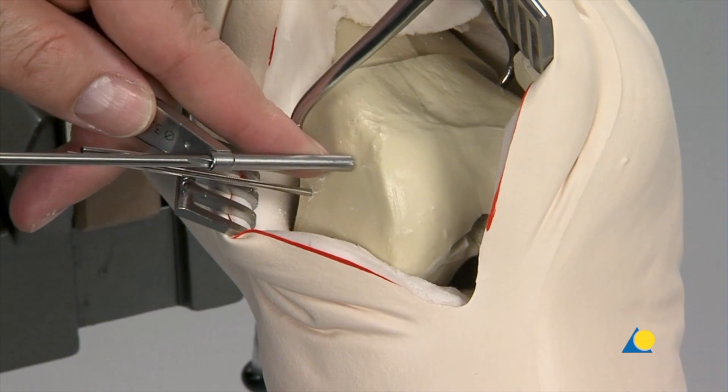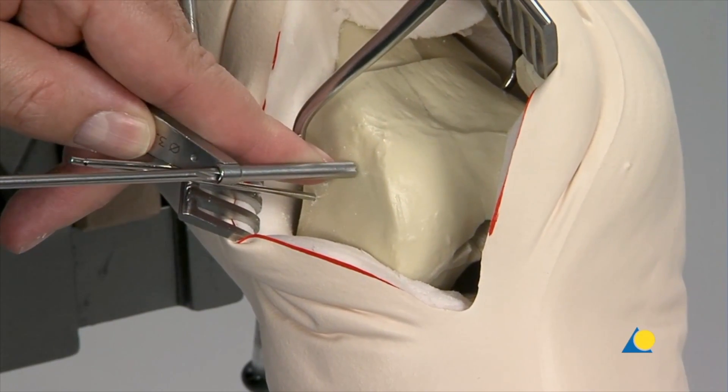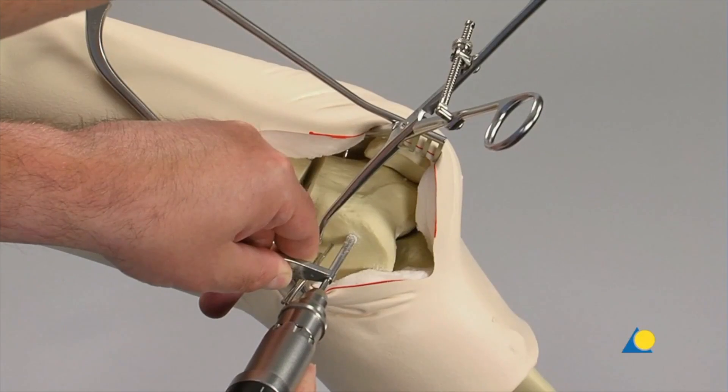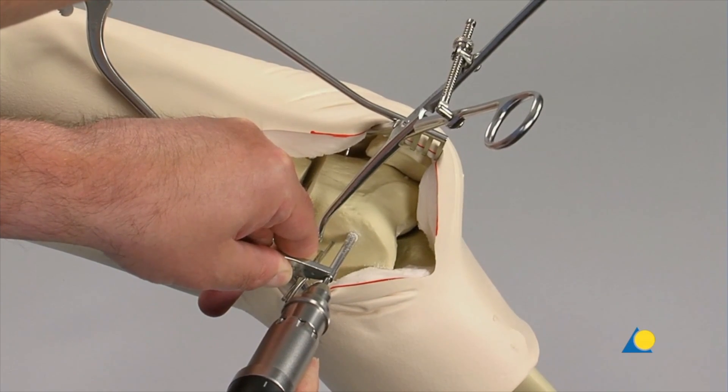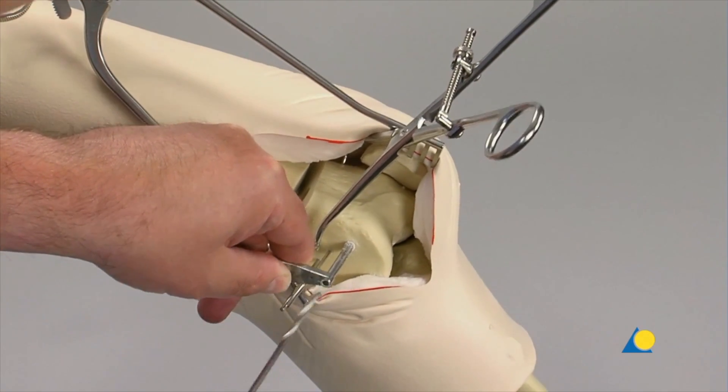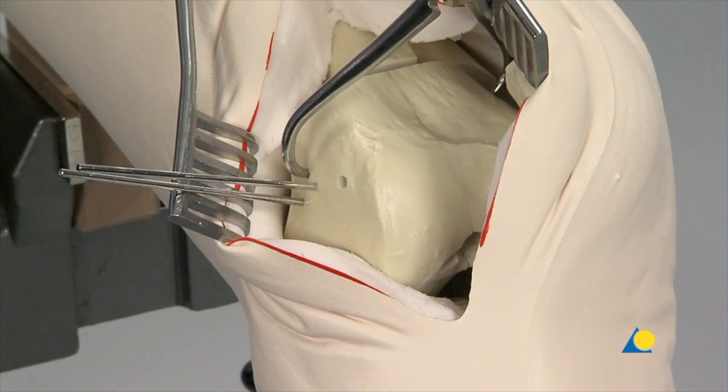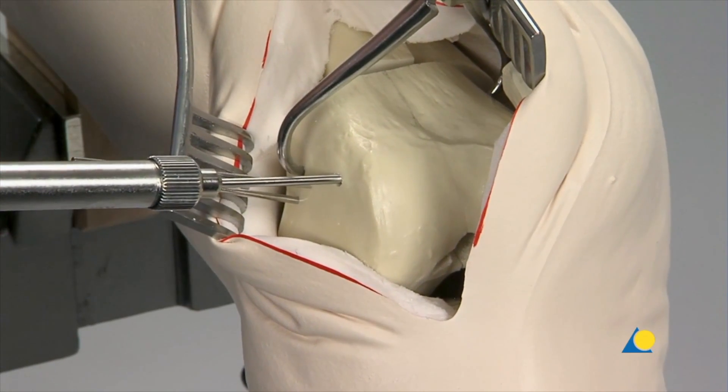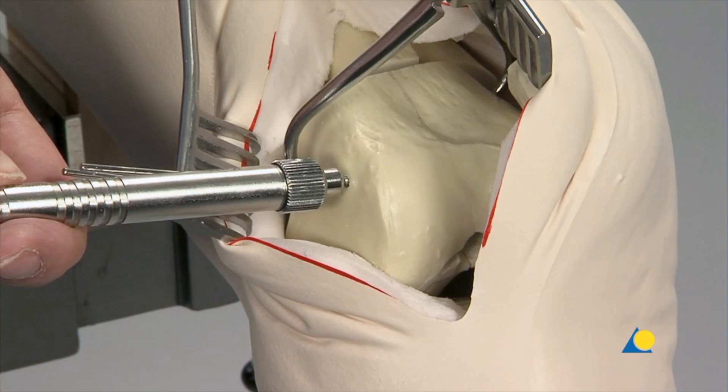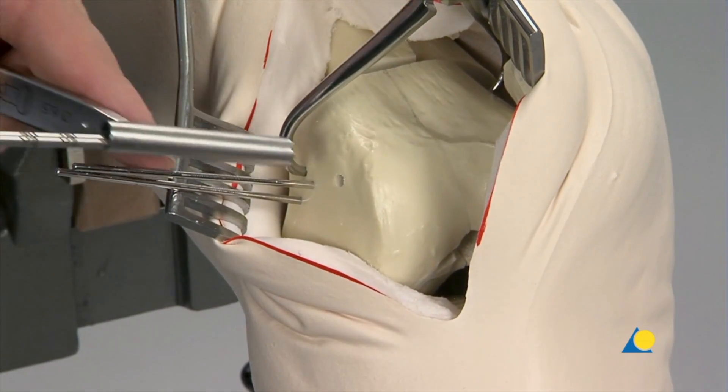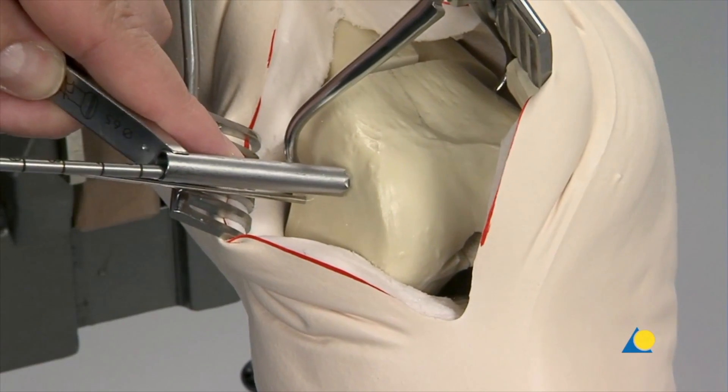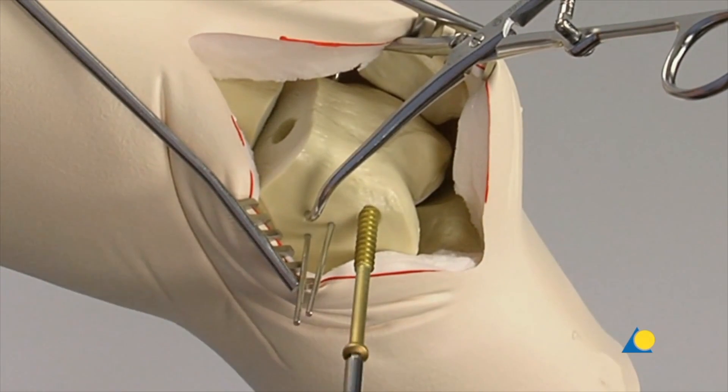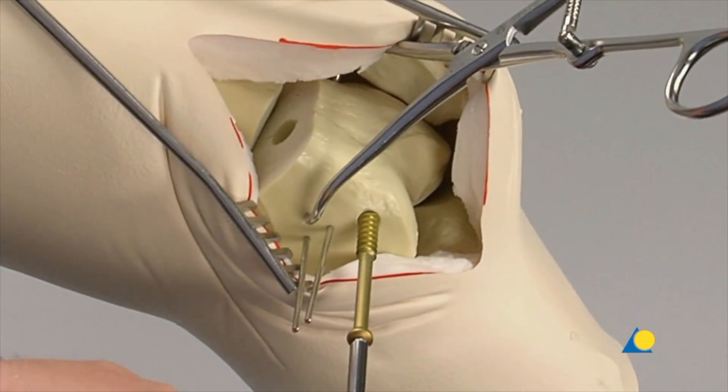For this exercise, two 6.5mm cancellous bone screws with a 32mm long thread are used. The screw hole is pre-drilled with the 3.2mm drill bit, parallel to the level of the ventral condyle. The depth gauge is used to measure the screw length. The threads are cut with the 6.5mm tap.